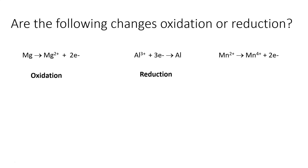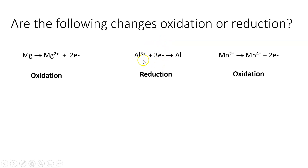You don't always have to go to a neutral atom — you could have one ion going to a different expression of that ion. For example, Mn²⁺ going to Mn⁴⁺ is oxidation. Oxidation always has the electrons on the product side because they're being lost by the starting material. Reduction always has the electrons on the reactant side because they're being added to the material.